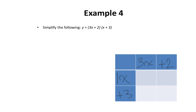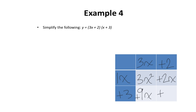I'm going to multiply 1x by 3x. Looking at the numbers: 1 times 3 is 3, and x times x is x squared — so 3x squared. Next, 1x multiplied by positive 2 is positive 2x. Then positive 3 multiplied by 3x: positive 3 times positive 3 is positive 9, and the x tags along — positive 9x. Last, positive 3 multiplied by positive 2 is positive 6.